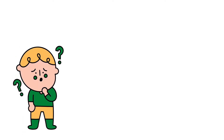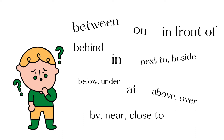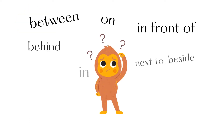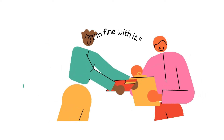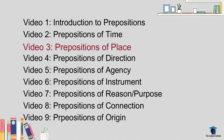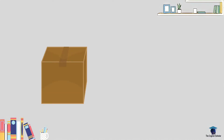Do you get confused about when to use these prepositions? Sometimes it's understandable, especially for non-native speakers. Prepositions are often confusing, especially when we only use phrases from what we've heard or memorized from native speakers. This video gives you the functions of these prepositions — prepositions of place to be specific — and we'll also give you example sentences. This is the third part of our series on prepositions.